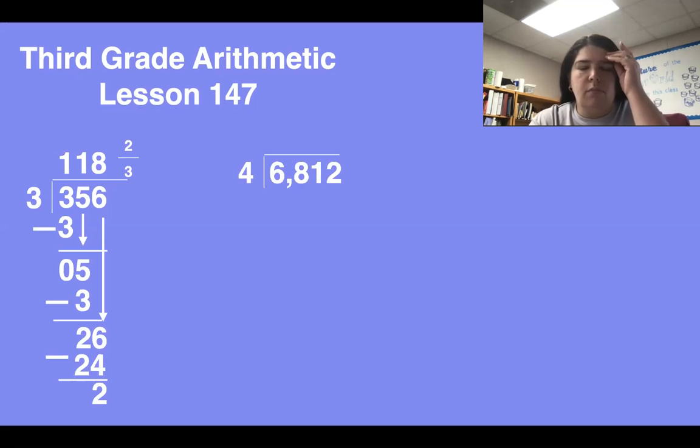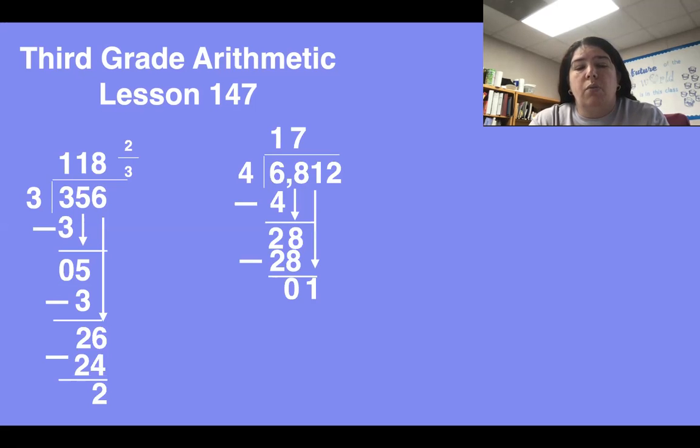Okay, let's try one more. 6 divided by 4 equals 1. 1 times 4 equals 4. 6 minus 4 equals 2. 2 is less than 4, so we bring down the 8. 28 divided by 4 equals 7. 7 times 4 equals 28. 28 minus 28 is 0. 0 is less than 4, so we bring down the 1. 1 divided by 4 equals 0. 0 times 4 equals 0. 1 take away 0 equals 1. 1 is less than 4, so we bring down the 2. 12 divided by 4 equals 3. 3 times 4 equals 12. And 12 minus 12 equals 0. 1,703.